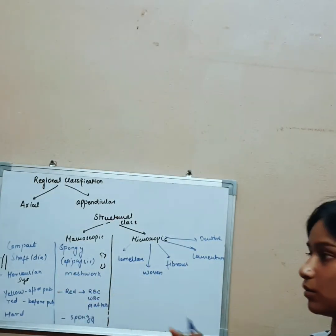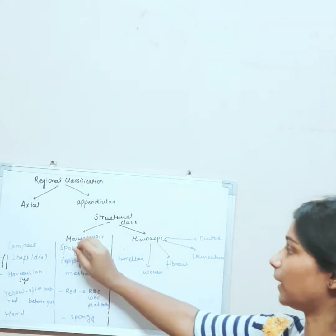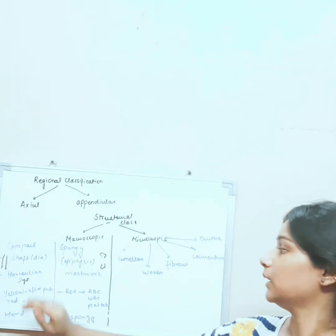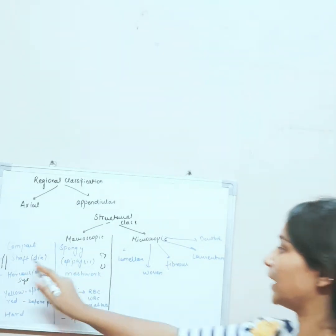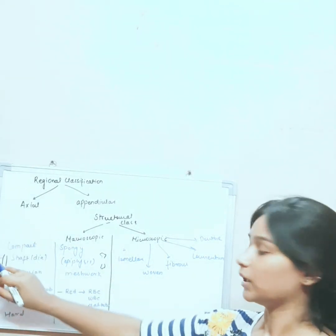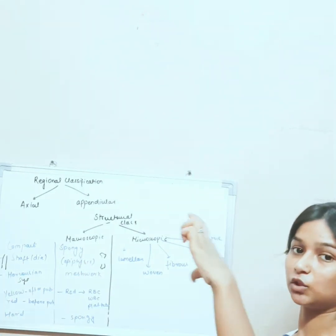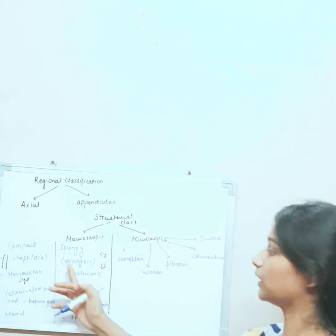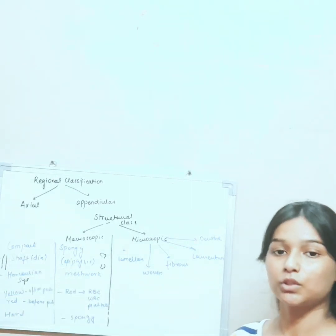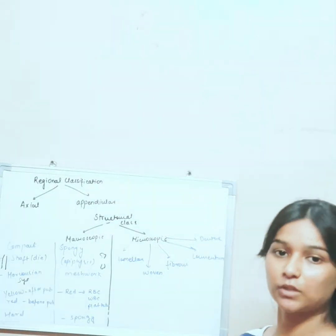Now moving on to structural classification. We have two types: macroscopic and microscopic, which are further divided into subcategories. In macroscopic classification, we have two types: compact bone and spongy bone. Compact bones are present in the shaft — the diaphysis — of long bones, while spongy bones are present at the two extended ends, in the epiphysis.